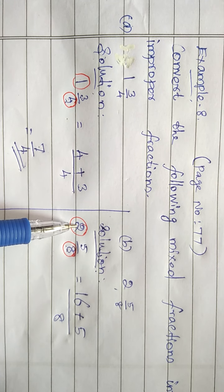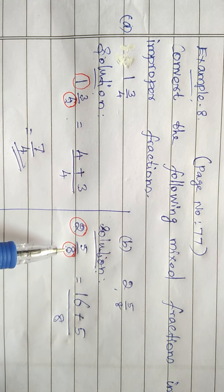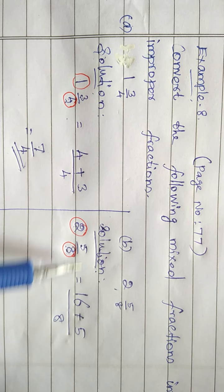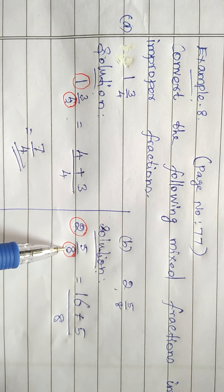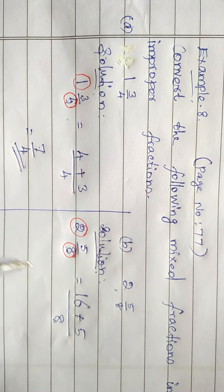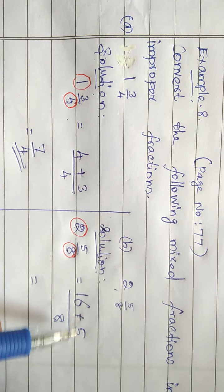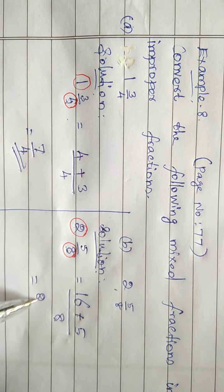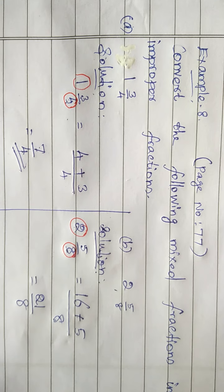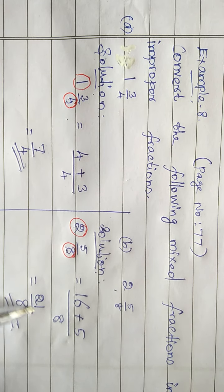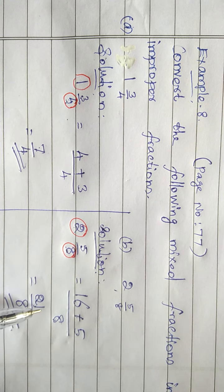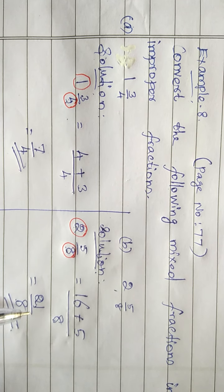Once again: 2 into 8 is 16, plus 5, divided by 8. What is 16 plus 5? It is 21. So the answer is 21 by 8. The numerator is 21 and the denominator is 8. The numerator is greater, so it is an improper fraction. We have converted 2 and 5 by 8 into improper fraction.